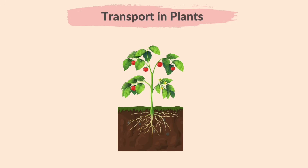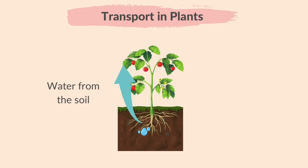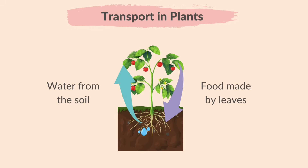Plants have a transport system to carry nutrients within them. Water from the soil is needed by the stem and leaves. The nutrients that leaves make during photosynthesis are needed by other regions of the plant, like stems and roots.